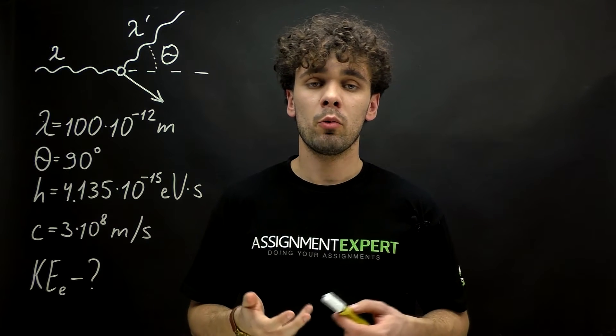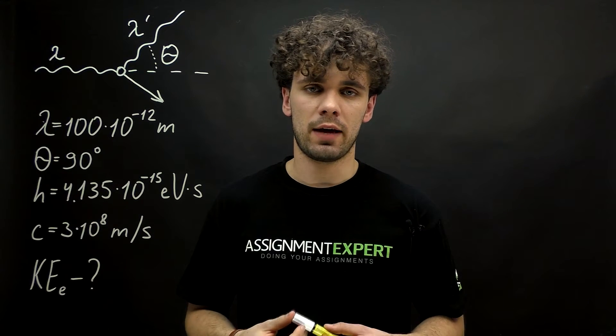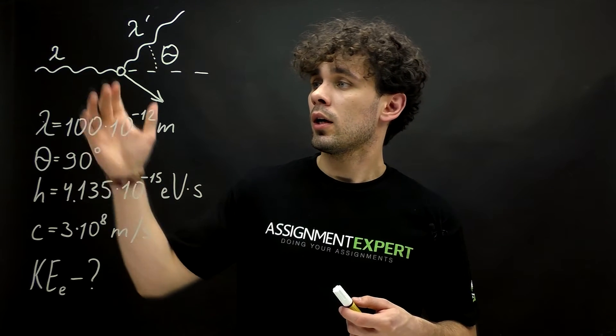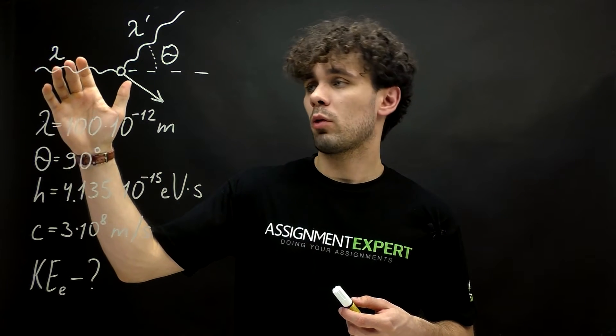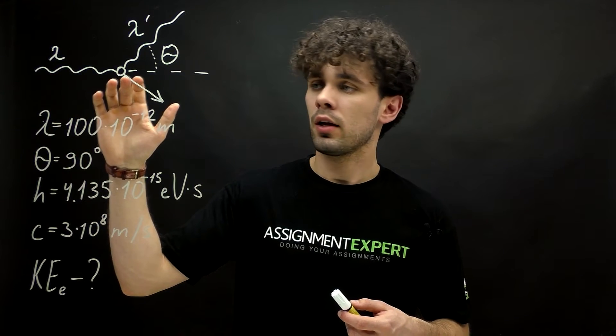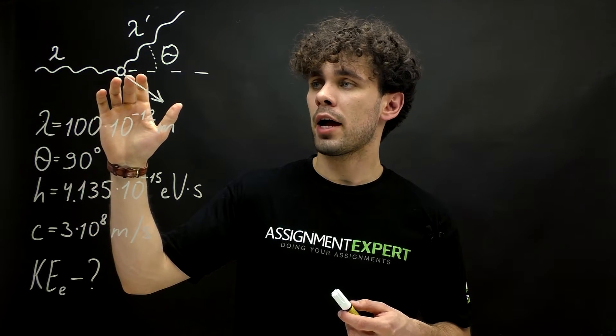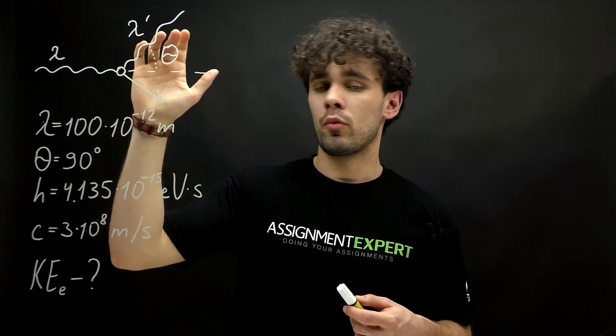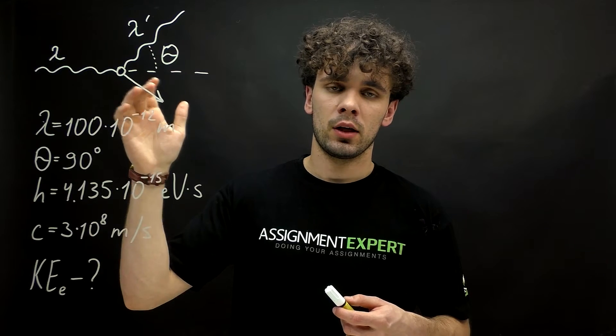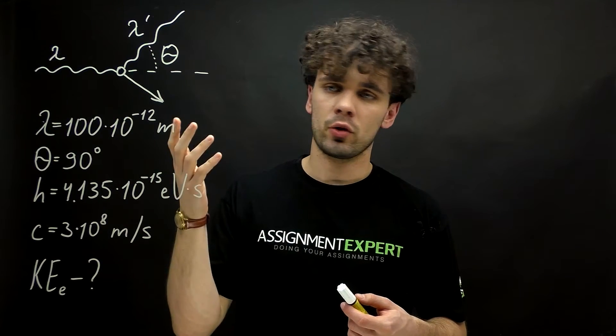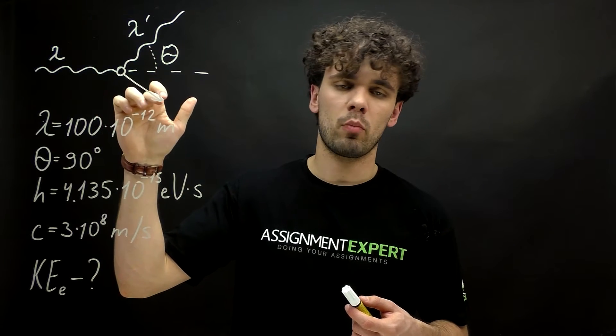So here we are dealing with the famous Compton effect. The effect is as follows. From the left, the photons with the wavelength lambda are moving to the carbon target at rest. They collide and after that, the new photon with the wavelength lambda prime emerges from the target. But part of the energy is transferred to the recoiling electron which moves in the direction shown by this arrow.